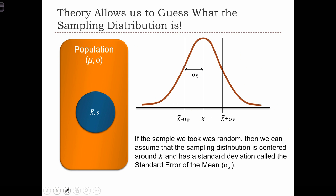So, theory allows us to guess what the sampling distribution is. If we take a random sample, then we can assume that the sampling distribution is centered around x bar, and that it has a standard deviation that we'll call the standard error of the mean. We'll denote that with sigma sub x bar. So, based on the properties of one sample, we're able to guess what the sampling distribution of a statistic is.